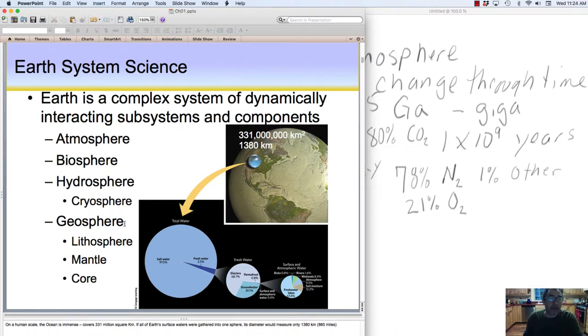The other sphere is the geosphere, and geosphere is solid Earth, and it includes the tectonic plates. Whenever you see this word lithosphere, we're talking about tectonic plates. Remember, lithos is a Greek word which means stone—so the stony sphere of Earth.